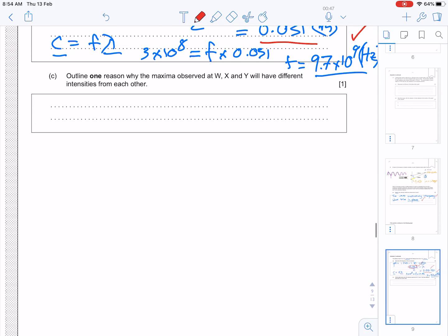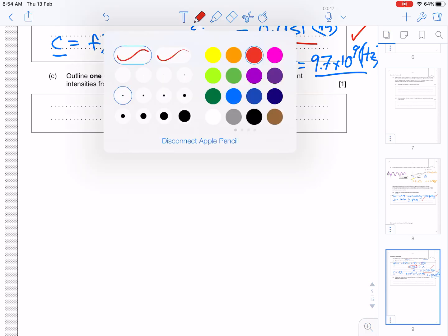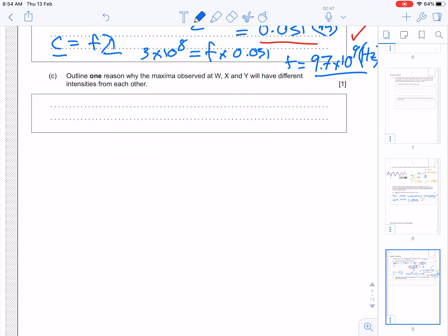Okay, outline one reason why the maxima observed at W, X and Y will have different intensities from one another. Okay, just a one mark question.